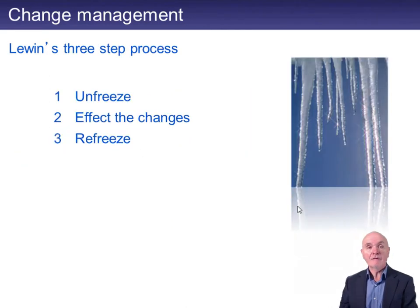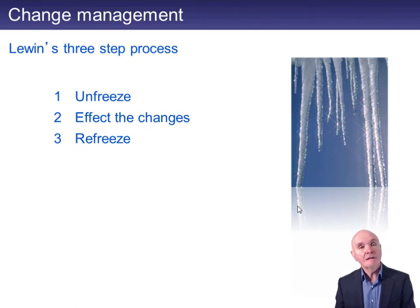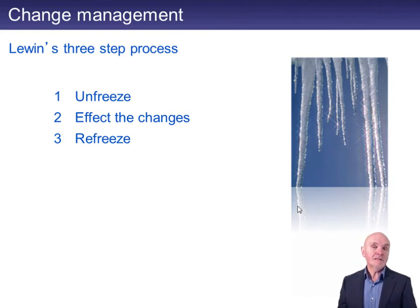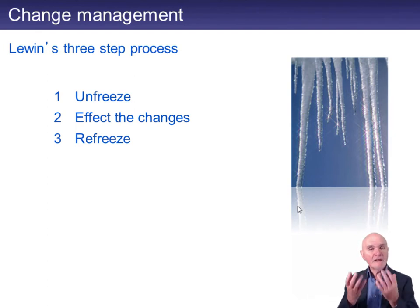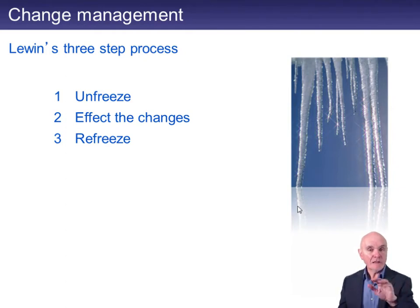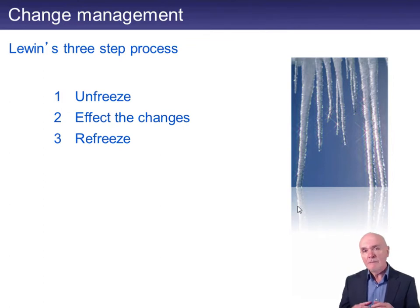The third method of change is also a Lewin one — very similar in many ways to the force field model. Unfreeze, effect change, refreeze. Unfreeze is softening people up — people have been doing the same things for the last ten years, so they have to be educated, communicated with, and got ready for change. Then you put through the change — that could involve training, reorganisation, and so on. It's quite a torrid period, with people uncertain, lacking confidence, and frightened about what's going to happen.